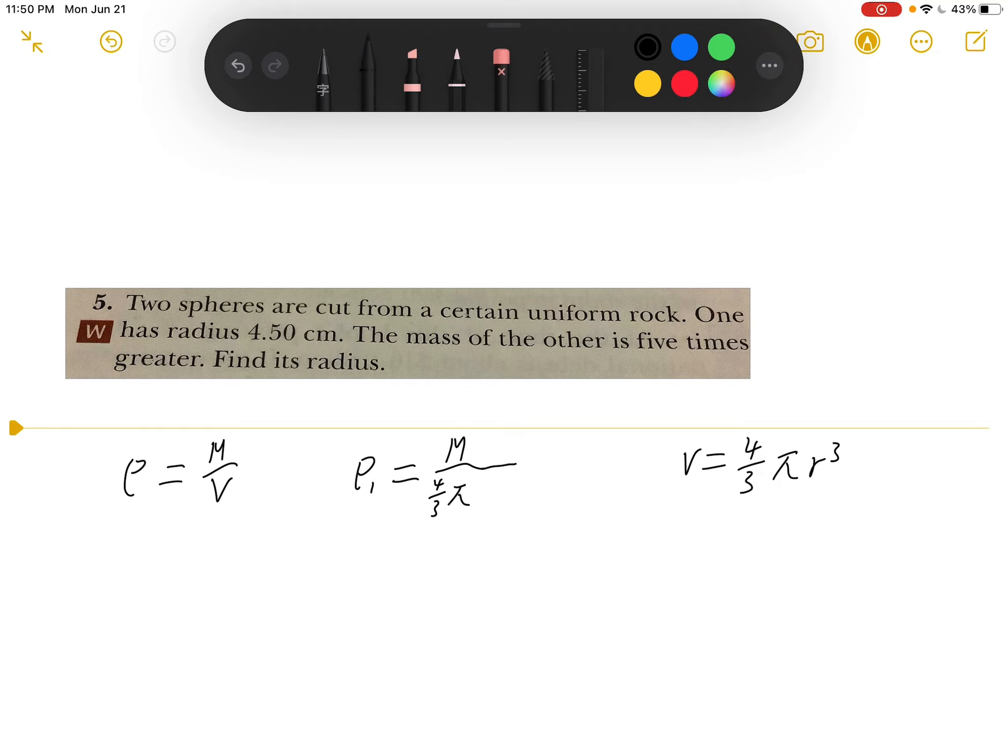They give us the radius is 4.5 cm, so I'm going to put in here. So that's the formula for rock 1.